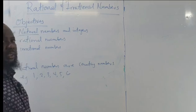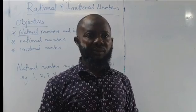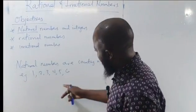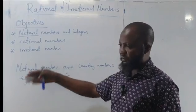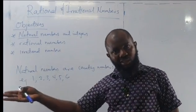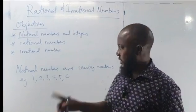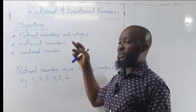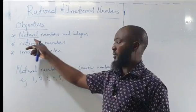Then, integers. Integers are both positive and negative natural numbers. Now we have listed out natural numbers: 1, 2, 3, 4, 5, 6, 7, and so on and so forth. So their positive and negative forms are integers, plus zero. Zero is an integer — it is a digit, but it is not a natural number. Please take note of that.